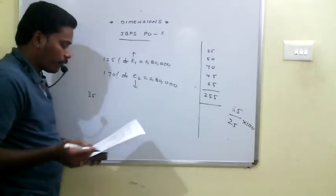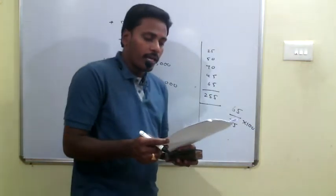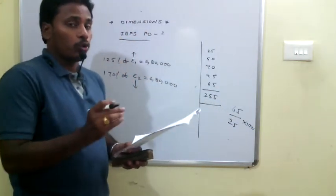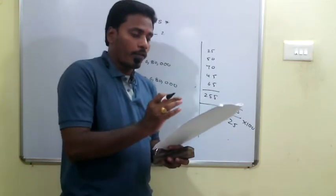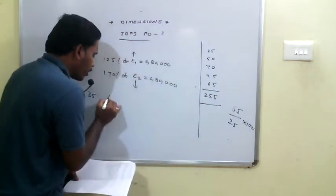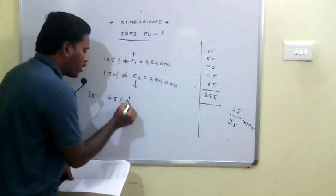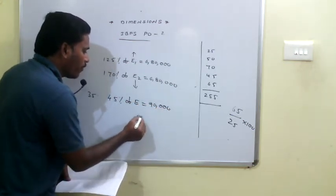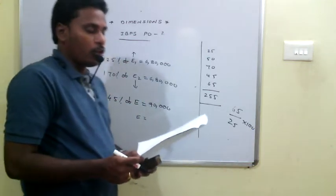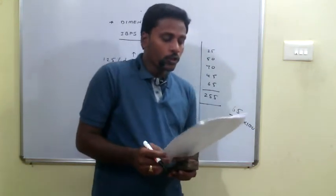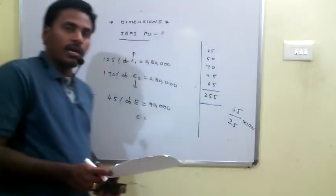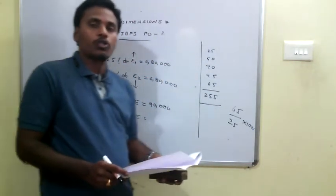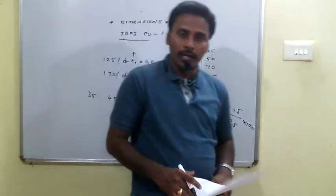Q35: The profit earned in 2008 was 90,000. From the line graph, profit percentage in 2008 is 45%. Since profit = 45% of expenditure, 45% of E = 90,000, giving expenditure = 2,00,000. Income = expenditure + profit = 2,00,000 + 90,000 = 2,90,000. That is the income of the company in 2008.